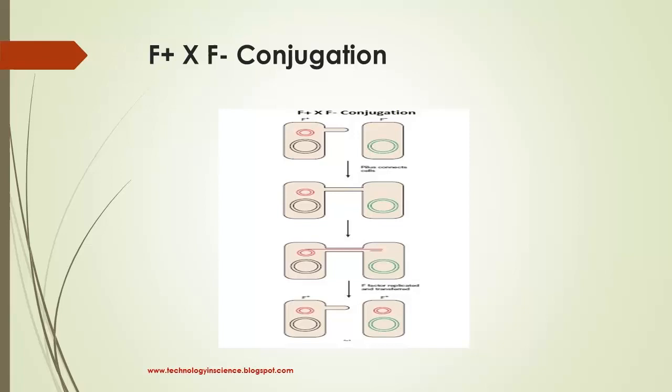The F plus strain contains an extra chromosomal F factor carrying the genes for pilus formation and plasmid transfer. During F plus F minus mating or conjugation, the F factor replicates by the rolling circle mechanism and a copy moves to the recipient. The entering strand is copied to produce double-stranded DNA.